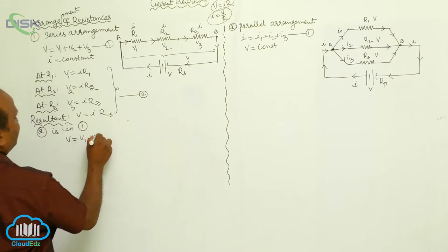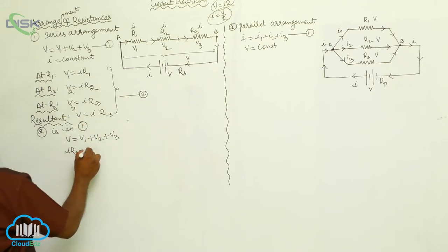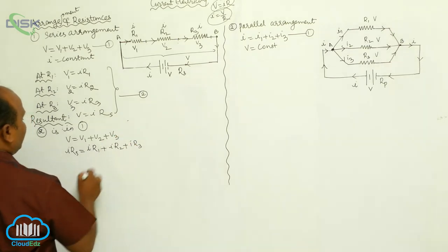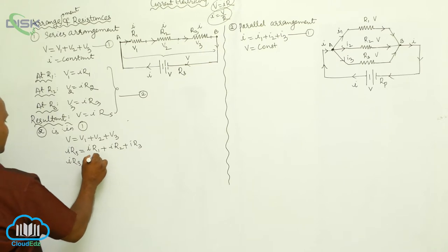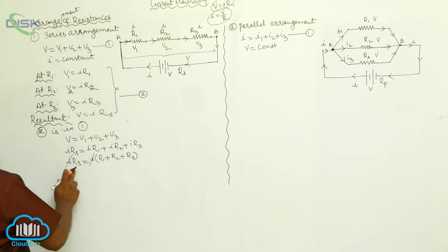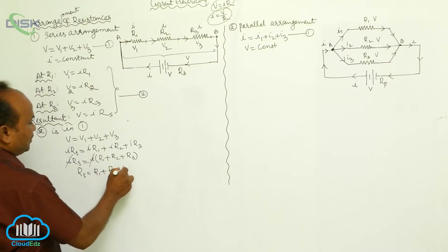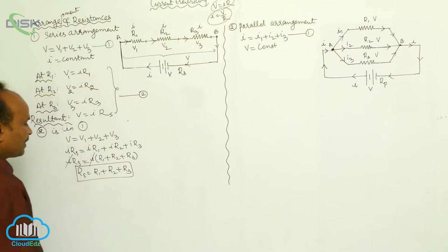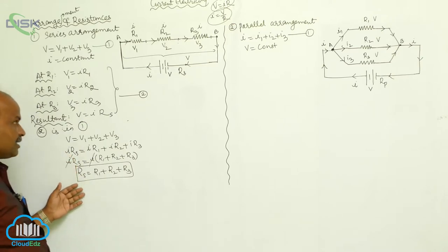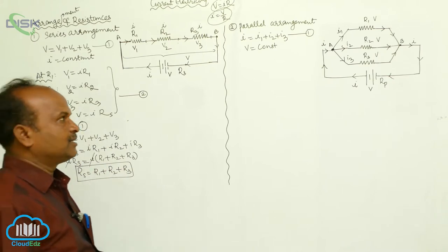V equals V1 plus V2 plus V3. V equals I into Rs; V1 equals I into R1; V2 equals I into R2; V3 equals I into R3. Therefore, I into Rs equals I times (R1 plus R2 plus R3). I gets cancelled since it is constant, therefore Rs equals R1 plus R2 plus R3. The resultant resistance in the series arrangement is the sum of the individual resistances present in the electrical circuit.